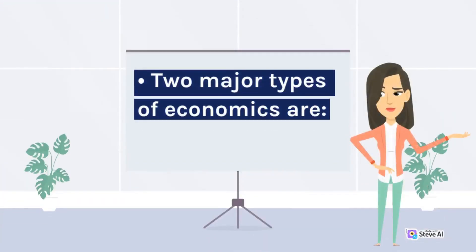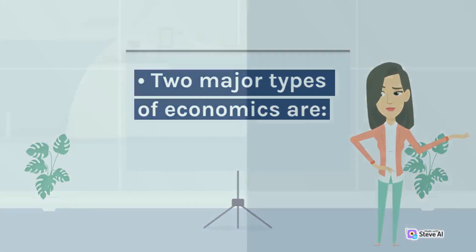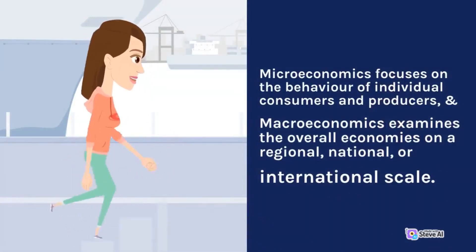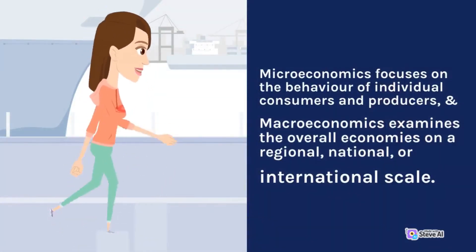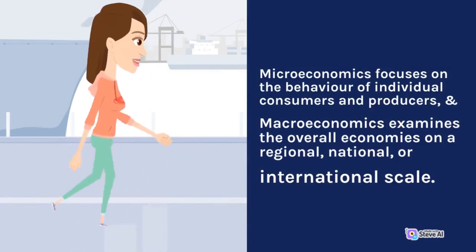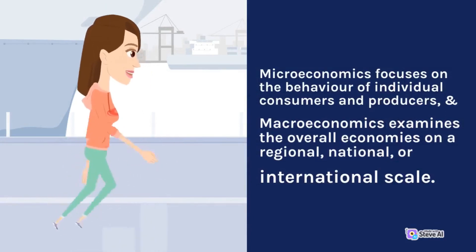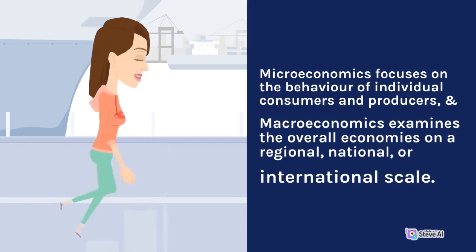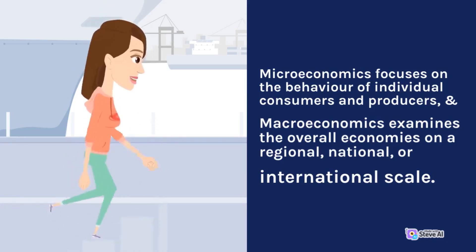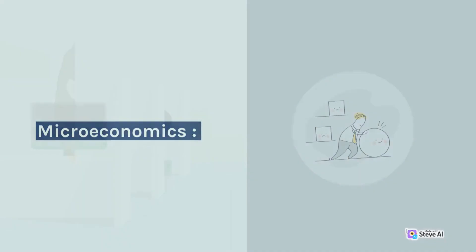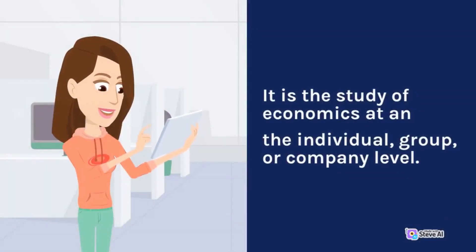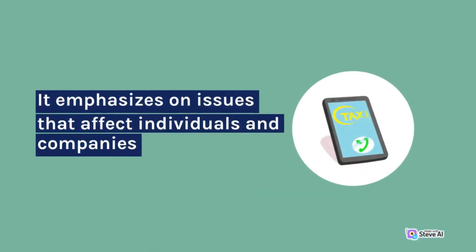Two major types of economics are microeconomics, which focuses on the behavior of individual consumers and producers, and macroeconomics, which examines overall economies on a regional, national, or international scale. Microeconomics is the study of economics at the individual, group, or company level, emphasizing issues that affect individuals and companies.